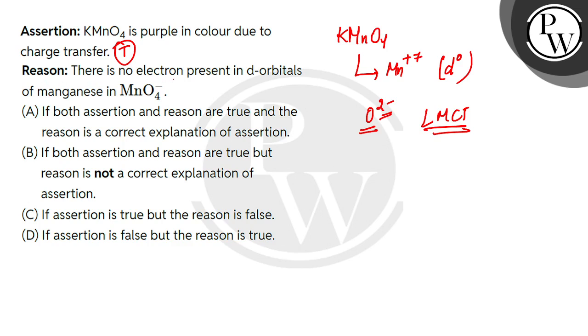The reason is that there is no electron present in d-orbital of manganese in MnO4 negative. This is also true. But you can see that they only tell us that MnO4 negative is a permanganate ion. In the direction, there is no electron in d-orbital. We did not explain how the color came.